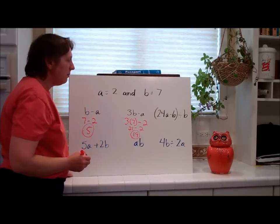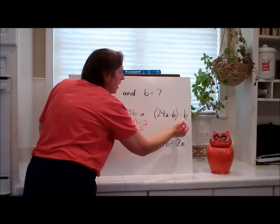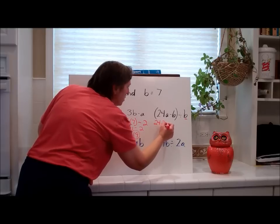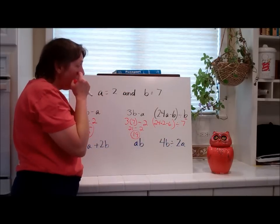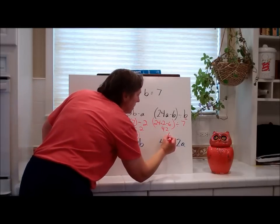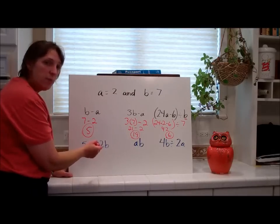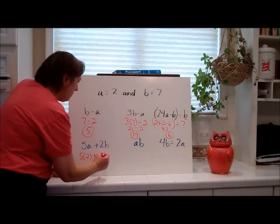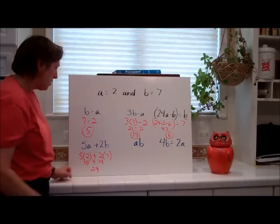Here's the next one: 24A minus 6, divided by B — I hope you got that that was a B. This is inside parentheses. I'm replacing it with 24 times 2, minus 6, with my parentheses, divided by 7. You can do this step by step: 24 times 2 is 48, minus 6 is 42, and 42 divided by 7 is 6. This one is 5A plus 2B, which means 5 times A plus 2 times B. So 5 times 2 plus 2 times 7 — I'm showing multiplication with parentheses. 10 plus 14 is 24.